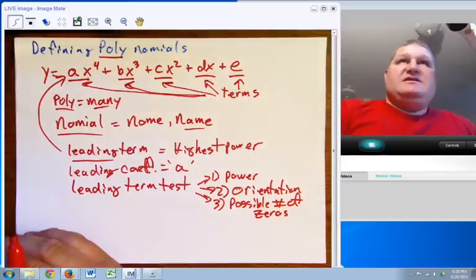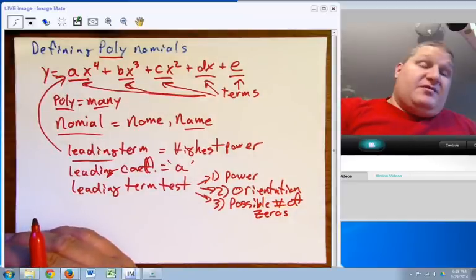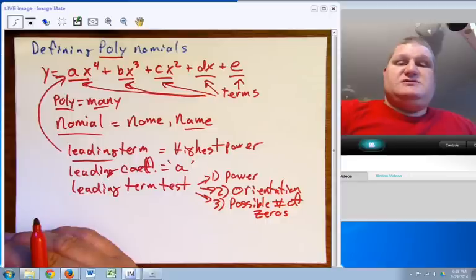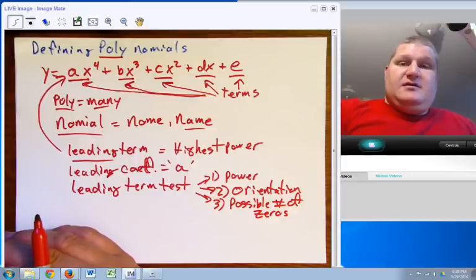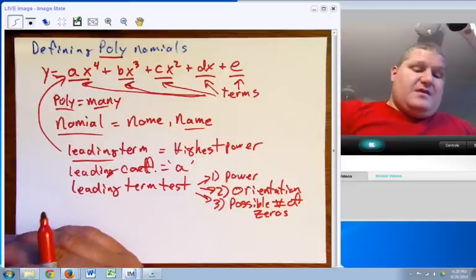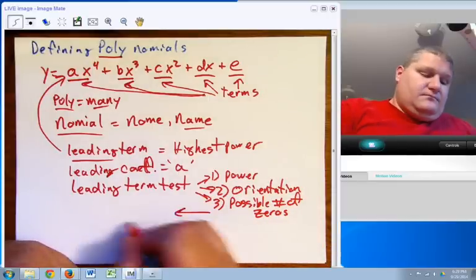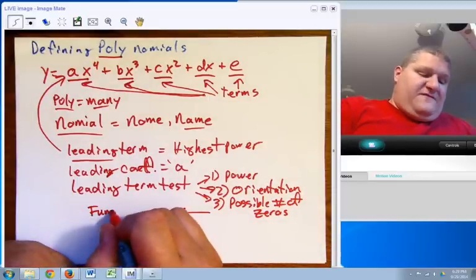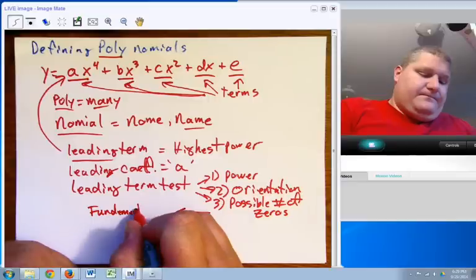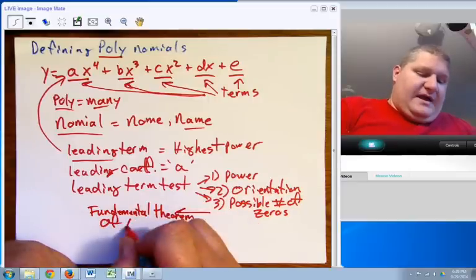Another thing that the leading term test will tell you is it will give you the possible number of zeros. Now, possible number of zeros is the same thing as the possible number of solutions. Possible number of x-intercepts. Zeros, solutions, and x-intercepts all mean the same thing. Also, additionally, roots. So roots, zeros, solutions, x-intercepts. All the same thing. This, by the way, is the fundamental theorem of algebra.